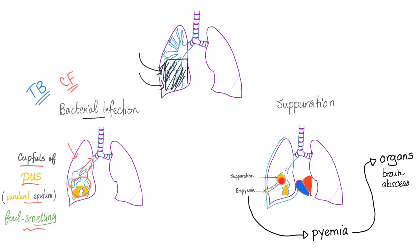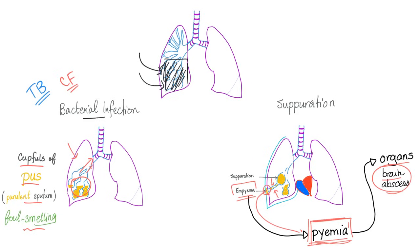Complications include suppuration. There may be empyema because sometimes a duct forms between the lung and the pleural space. Do not confuse empyema with pyemia. Empyema is pus in the pleural cavity. Pyemia is septic emboli — the septic focus leaves and travels in the blood to other organs, such as the brain, leading to brain abscess.